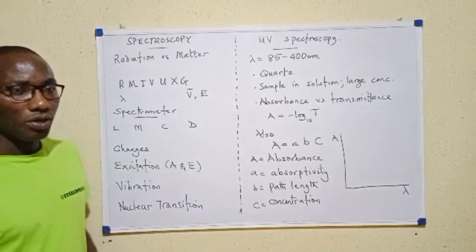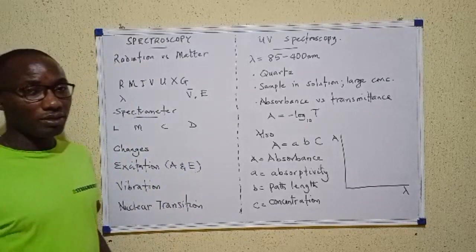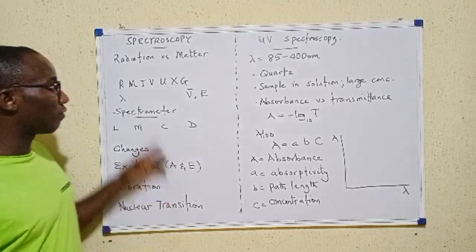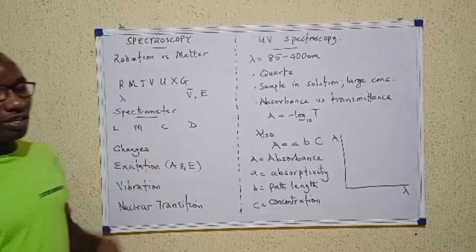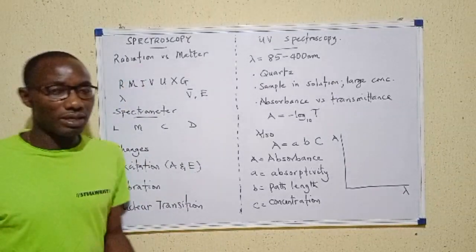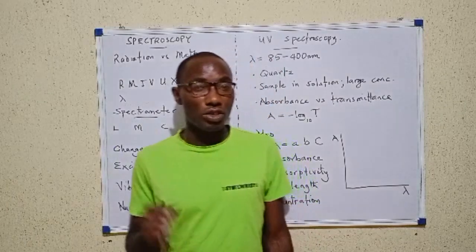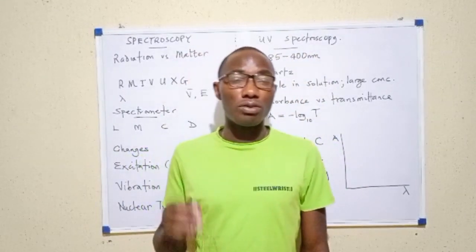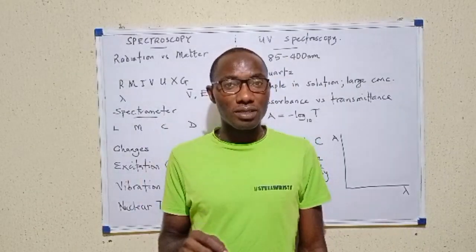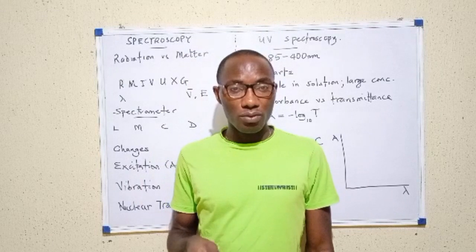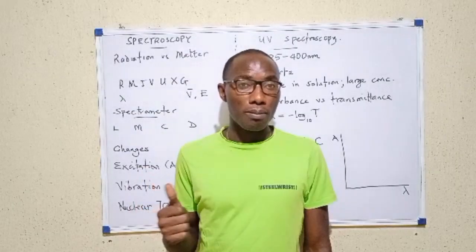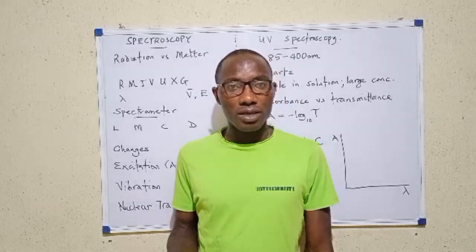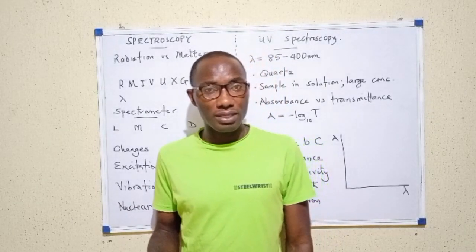Welcome to our spectroscopy video. In this video, I'll be introducing spectroscopy — there's going to be a next video where I'll continue to look at the different other types. But for now, what is spectroscopy? It is the study of the interaction between radiation and matter. When electromagnetic radiation falls on matter, certain changes occur, and these changes give us information about the structure of matter and, in some cases, how much of such matter is present. In other words, spectroscopy could be qualitative — telling us the structure of matter — or in some instances, quantitative, telling us how much of such matter is present.